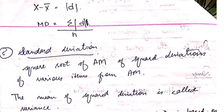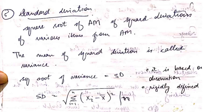Next is standard deviation. It is the square root of the arithmetic mean of squared deviations of various items. The mean of squared deviations is called variance. Standard deviation is denoted by the symbol sigma, and its formula is the square root of the variance.